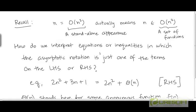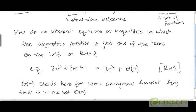But how do we interpret equations or inequalities in which the asymptotic notation is one of several terms on the left-hand side or on the right-hand side of the equation or inequality? Here is an example: 2n-squared plus 3n plus 1 equals 2n-squared plus theta of n. This is an example where theta of n is one of the two terms appearing on the right-hand side of this equation.